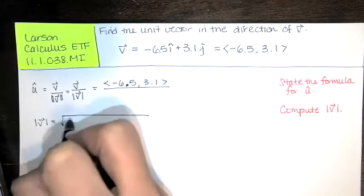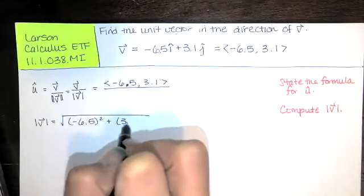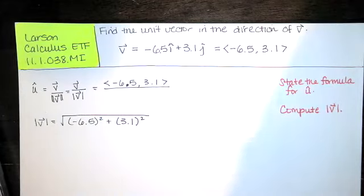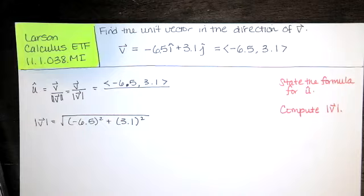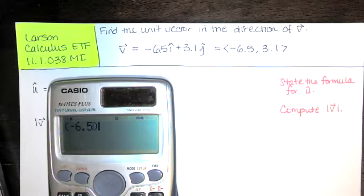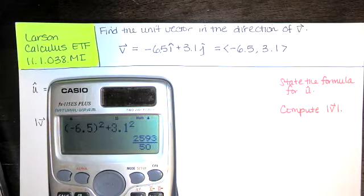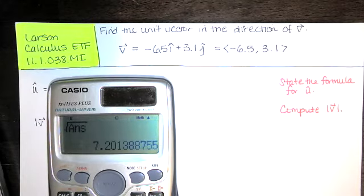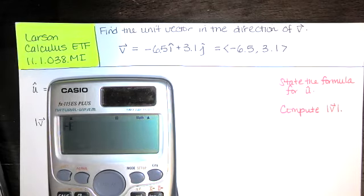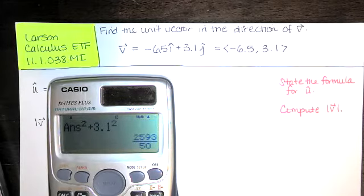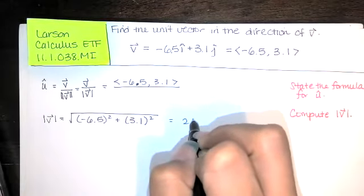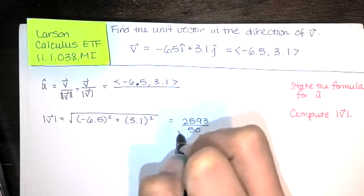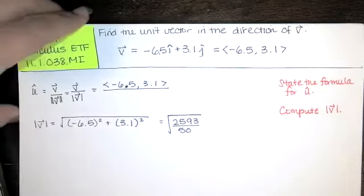So remember how we find the length. We take the components, we square them and add them and take the square root. Now, I'm going to use my scientific calculator to do this calculation. I've got negative 6.5, I'm squaring that, then I'm adding 3.1 squared. I get that fraction. I want to take the square root of my answer. That is obviously a decimal approximation of something else. So let's go back. I had negative 6.5, I want to square that and then add 3.1 squared. So that was 2593 over 50. And we're taking the square root of that. Since I don't want a decimal approximation, I think I will just leave it like that.